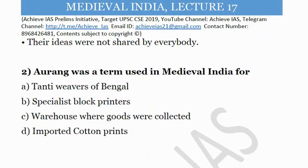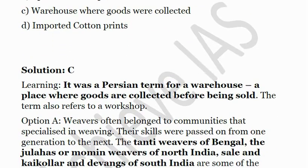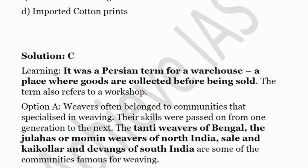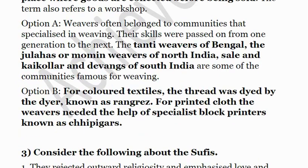Second question: 'Aurang' was a term used in medieval India for — A) Tanti weavers of Bengal, B) specialist block print printers, C) warehouse where goods were collected, D) imported cotton prints. The answer is C — warehouse where goods were collected. It is a Persian term. Weavers in Bengal were called Tanti, in northern India they were called Jalaha, and in south India they were called Kaikollar and Devangs.